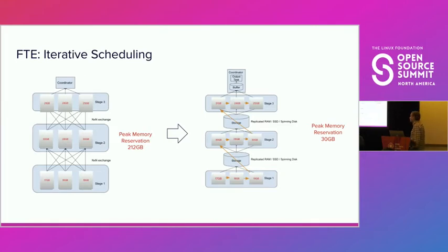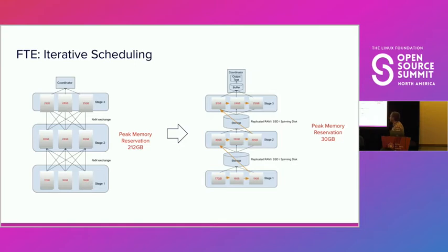Allowing each task to run independently opens up many interesting opportunities. One of them is reducing the memory required to process a query. For example, if a query has six different tasks using from 17 to 30 gigabytes each, with streaming you'd have to run them all at once, needing at least 212 gigabytes of memory. But with the new execution model, since you can run one task at a time, you only need 30 gigabytes of memory at peak for this query to succeed.